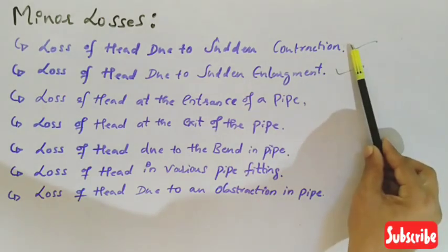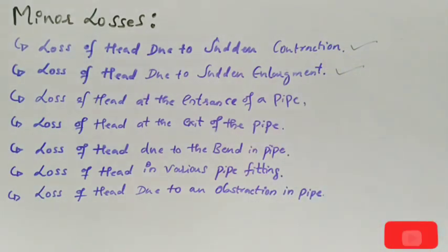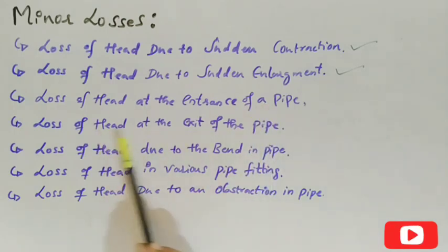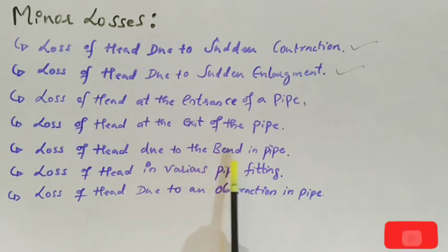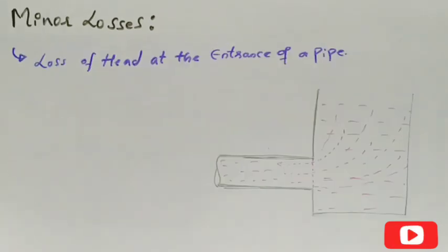In the previous video we covered loss of head due to sudden contraction as well as loss of head due to sudden enlargement. Today we will discuss the remaining minor losses: loss of head at the entrance of a pipe, loss of head at the exit of the pipe, loss of head due to a bend in the pipe, loss of head in various pipe fittings, and loss of head due to obstruction in the pipes.